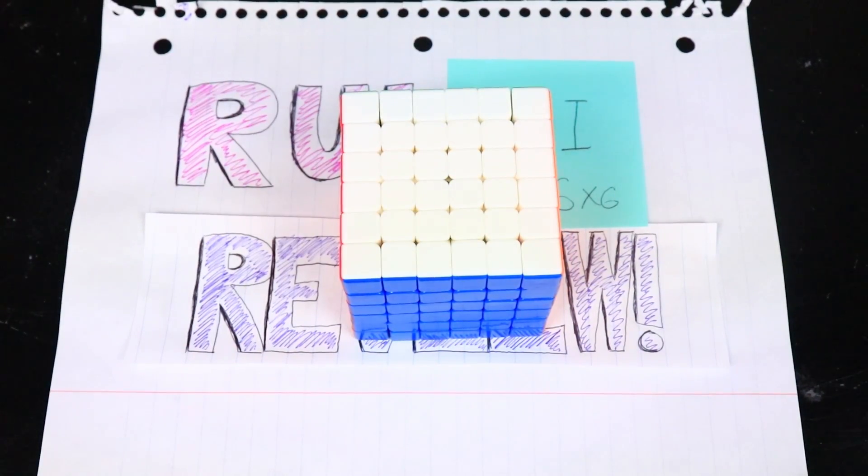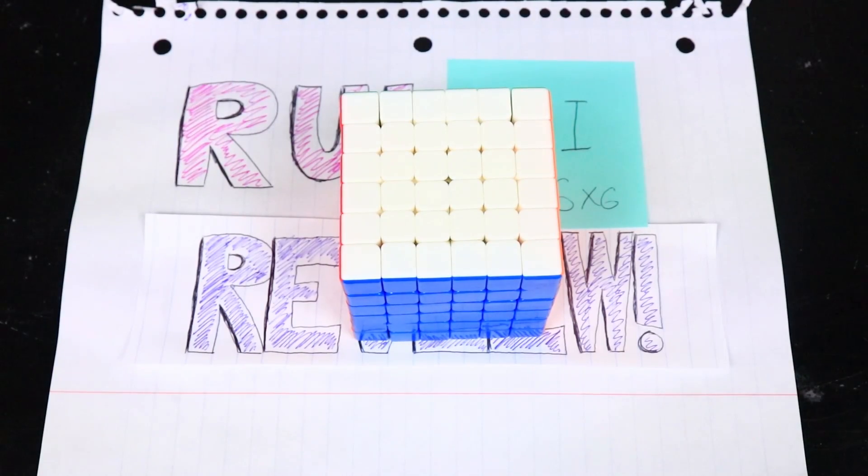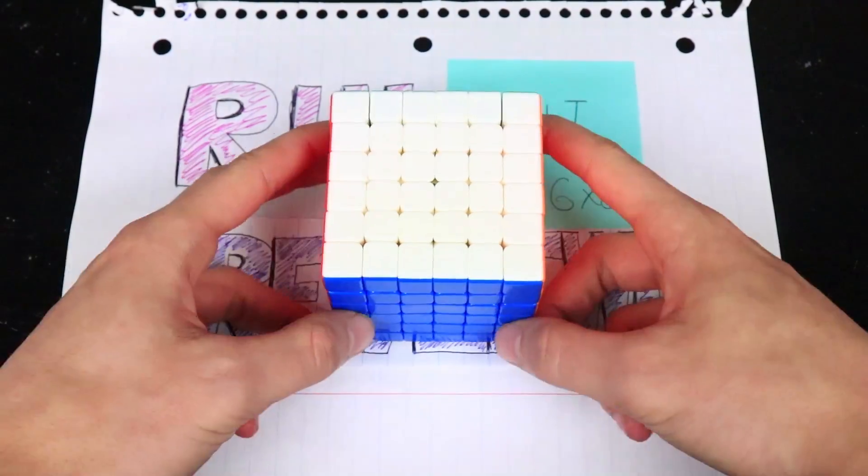All right, I've done some solves on the 6x6, and if you guys are watching these videos in order, you'll know that I gave the 5x5 a pretty bad review, and the 6x6 is 100 bazillion times worse.